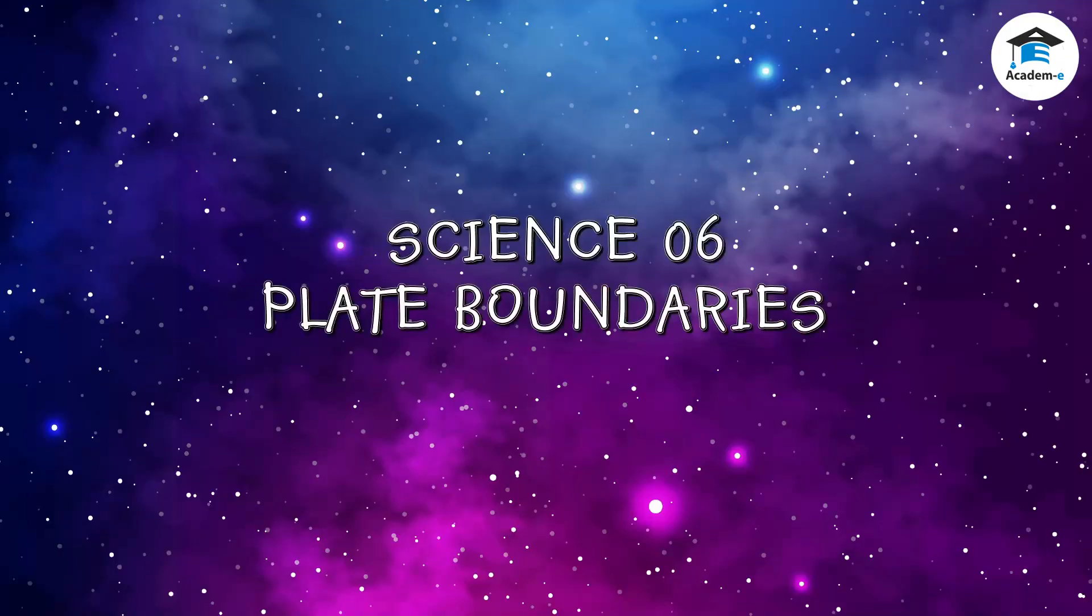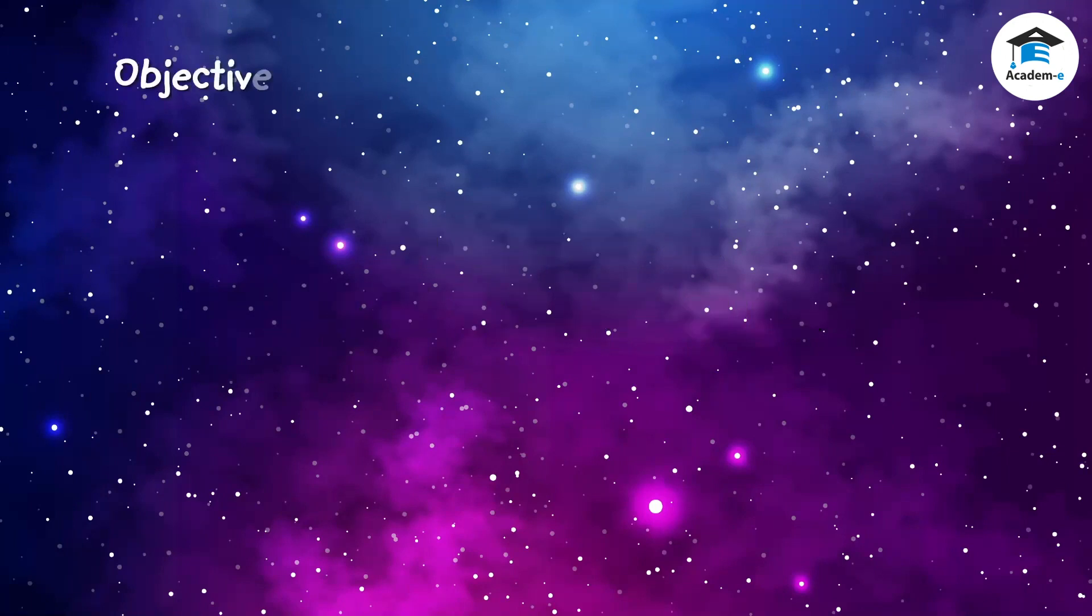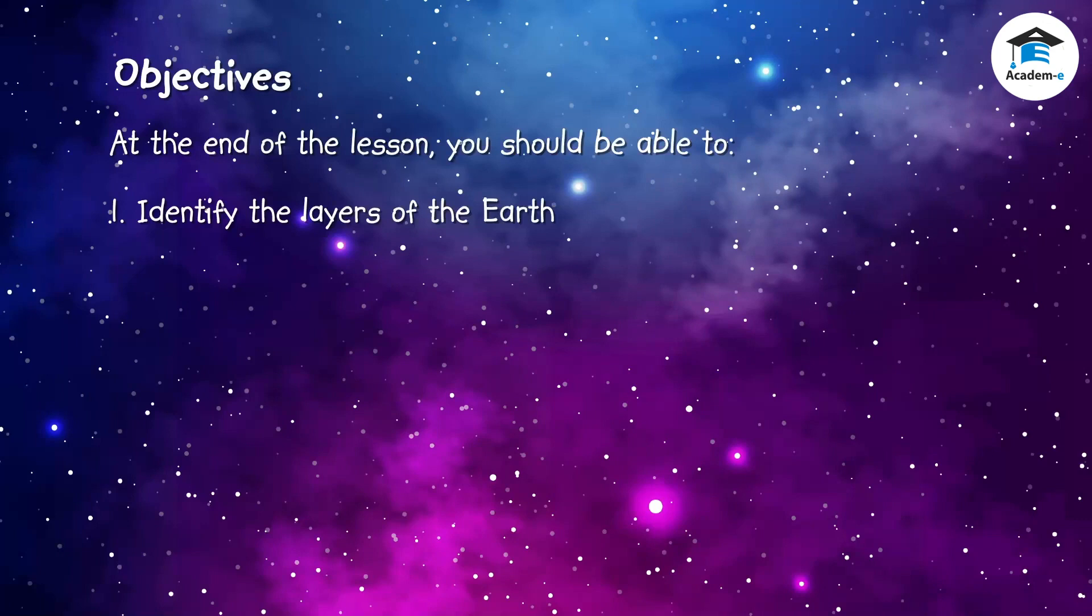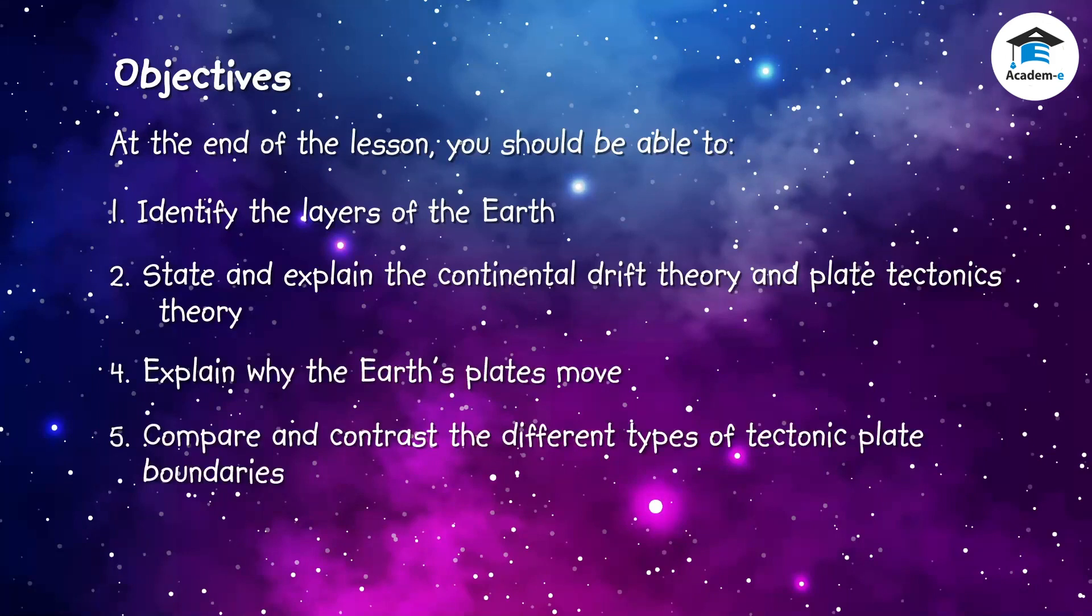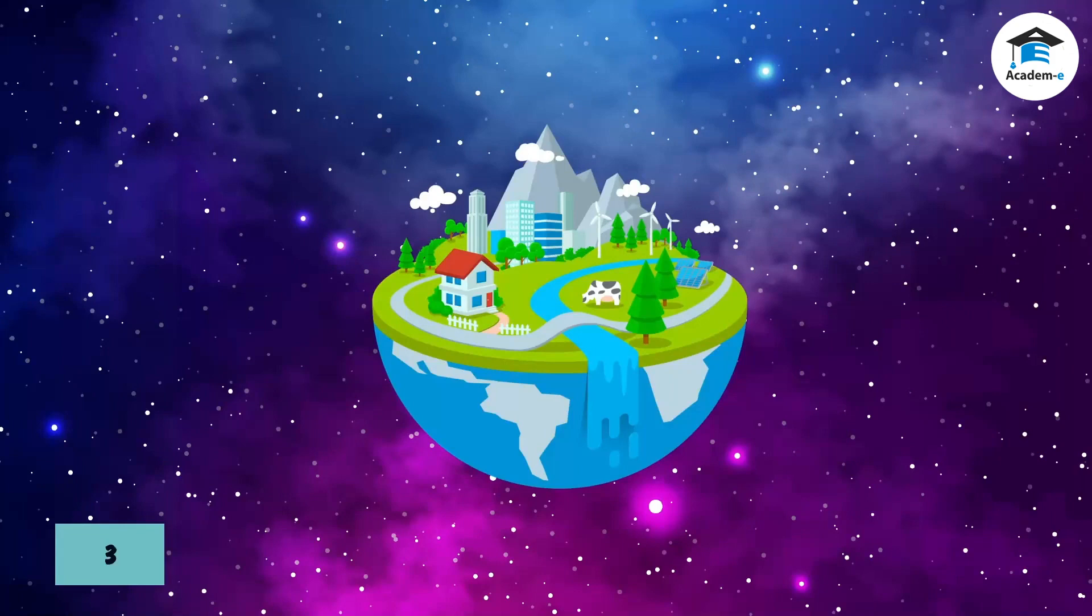Science 6: Plate Boundaries. Objectives: At the end of the lesson you should be able to identify the layers of the Earth, state and explain the continental drift theory and plate tectonics theory, explain why the Earth's plates move, and compare and contrast the different types of tectonic plate boundaries.